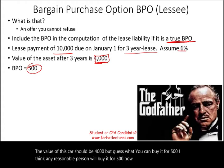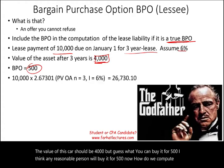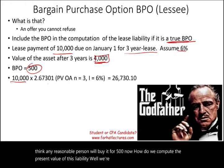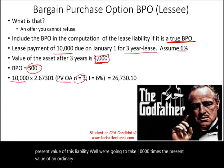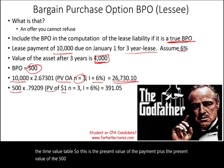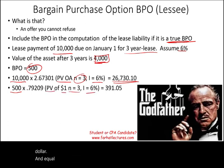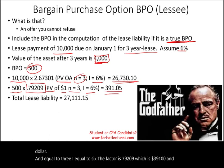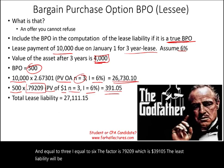To compute the present value of the lease liability, we take $10,000 times the present value of an ordinary annuity factor for n=3, i=6%, which is 2.67301, plus the present value of the $500 bargain purchase option as a single sum discounted at n=3, i=6%, using the factor 0.79209, which equals $391.05. The total lease liability is $27,111.15.